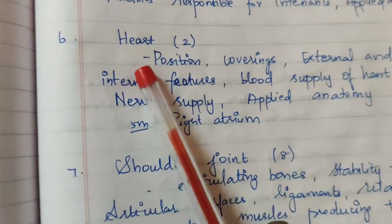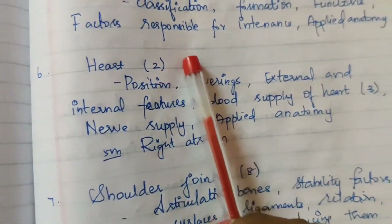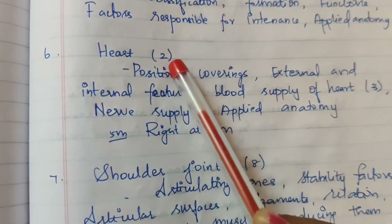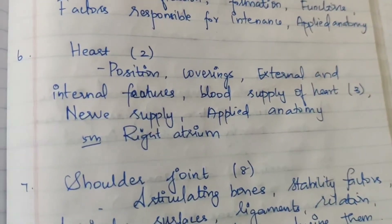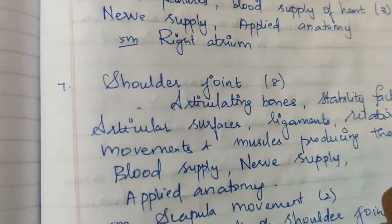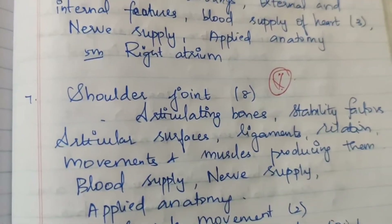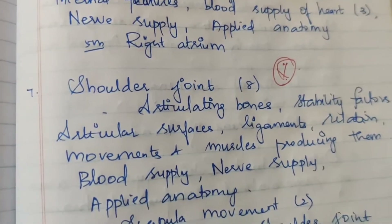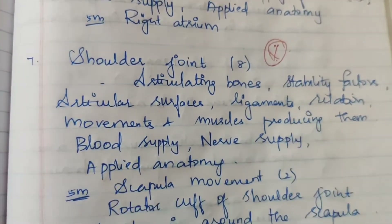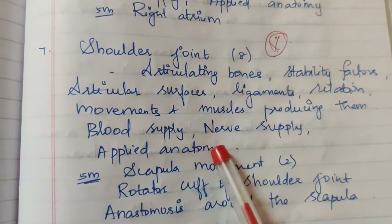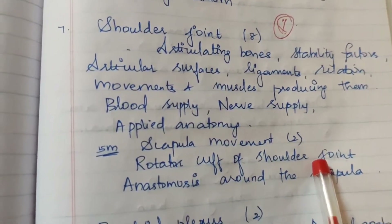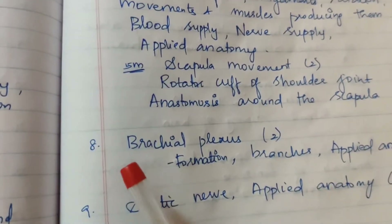Sixth question: heart — asked 2 times for 15 marks. Subtopics: position, coverings, external and internal features, and blood supply of heart. Nerves and applied anatomy also covered. Seventh question: movements of the shoulder — capillary movements asked 5 marks 2 times. Rotator cuff of shoulder joint asked 1 time for 5 marks, and anastomosis around the shoulder asked 1 time.